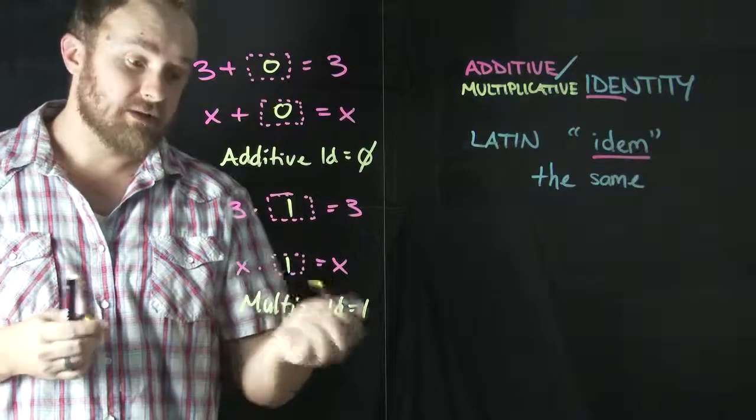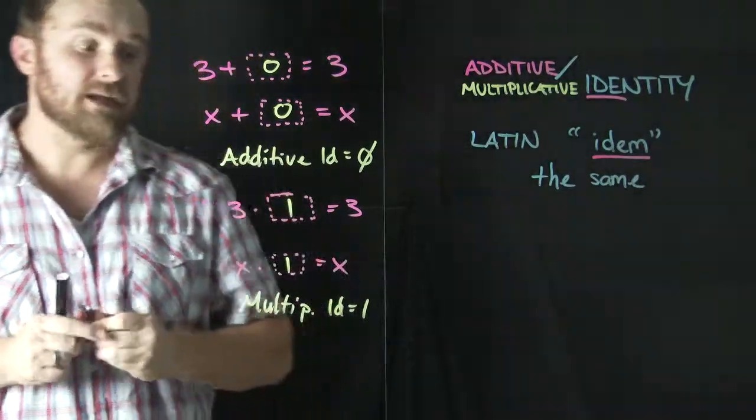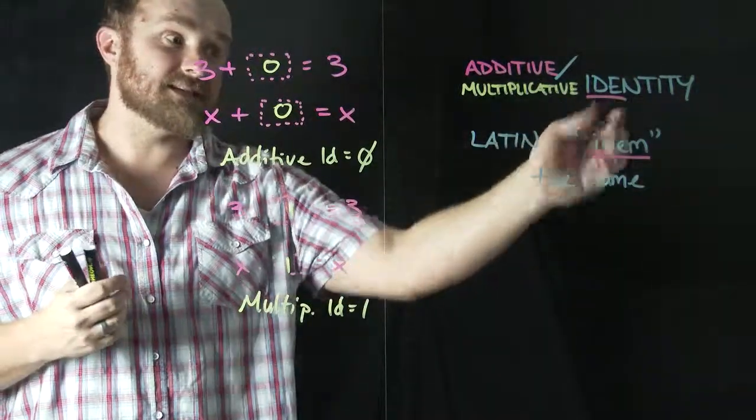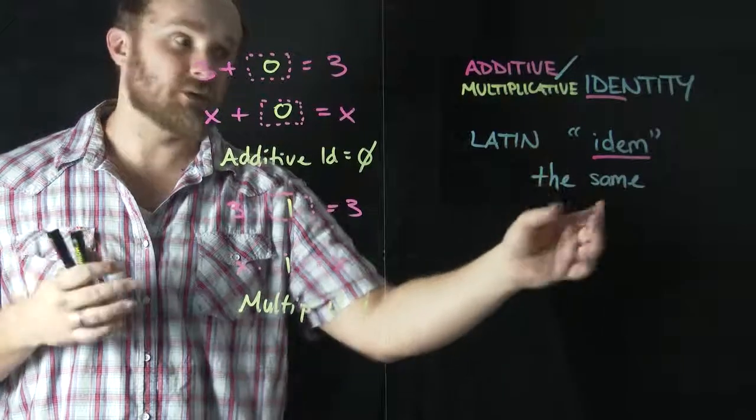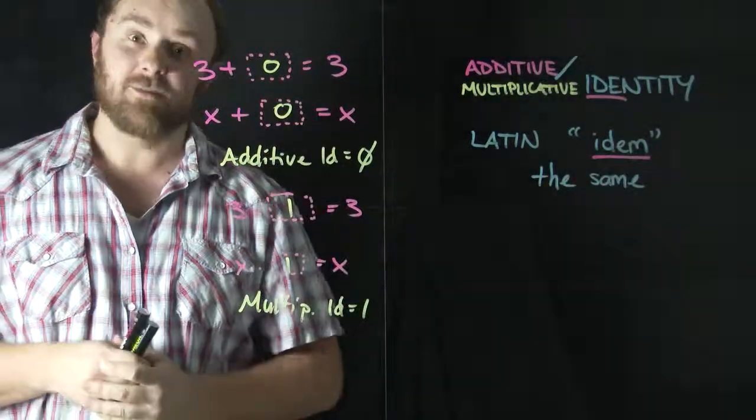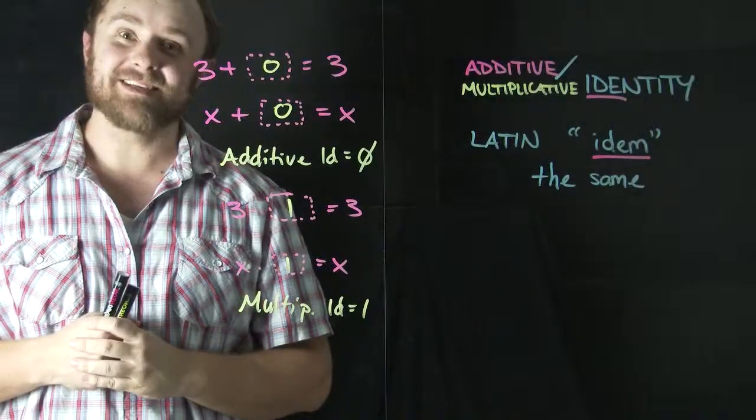So the additive identity is zero. The multiplicative identity is one. In general, a number's identity, just as whatever is happening to it, has to make sure that that number stays the same, whether we're adding or multiplying. I hope this video was helpful. And thanks for watching.